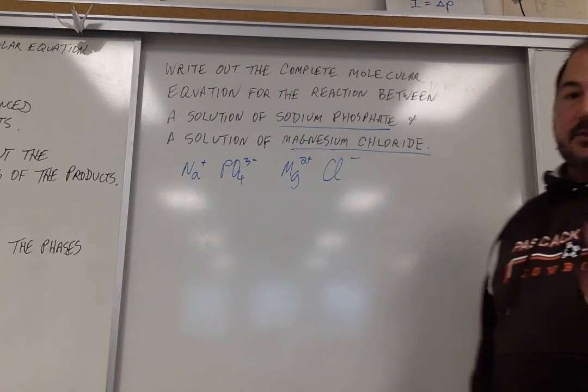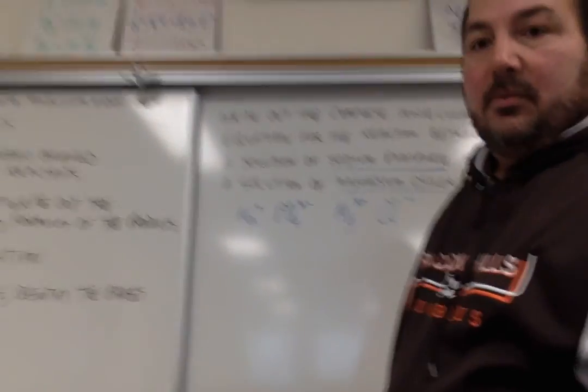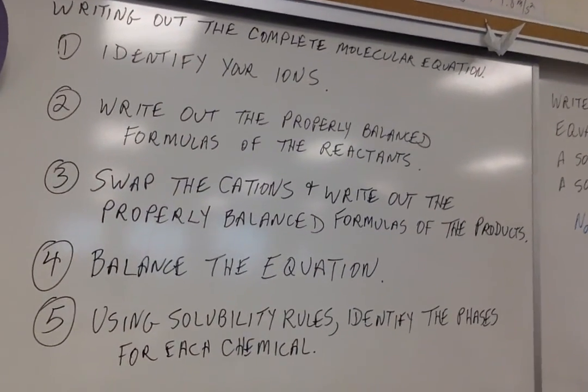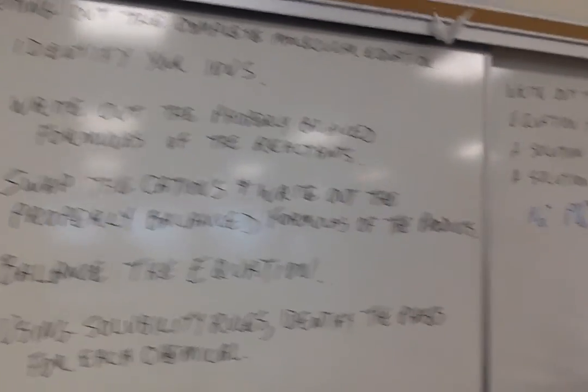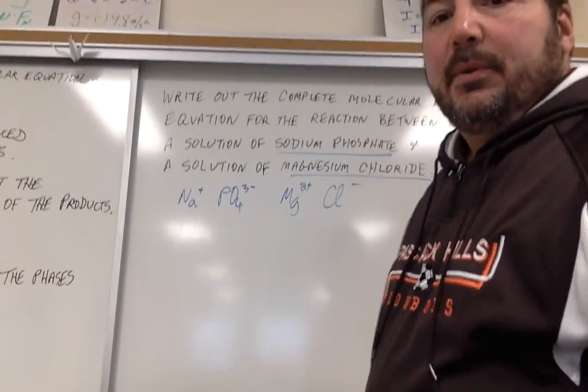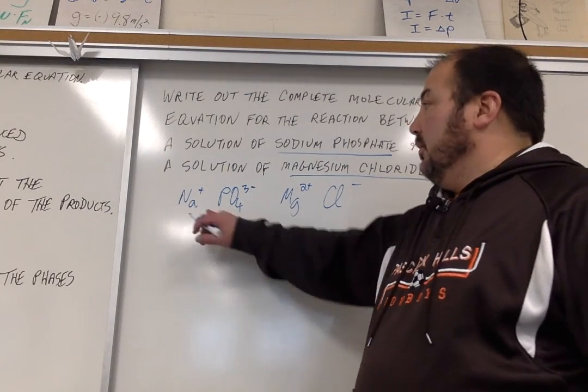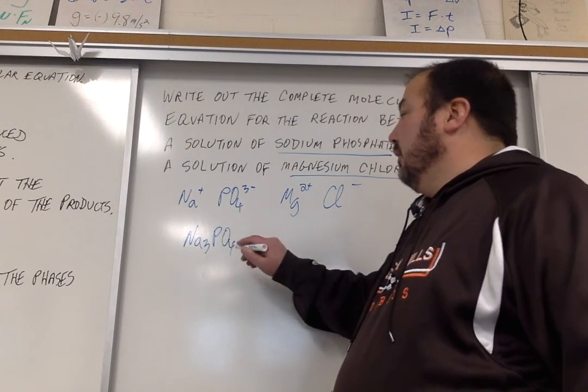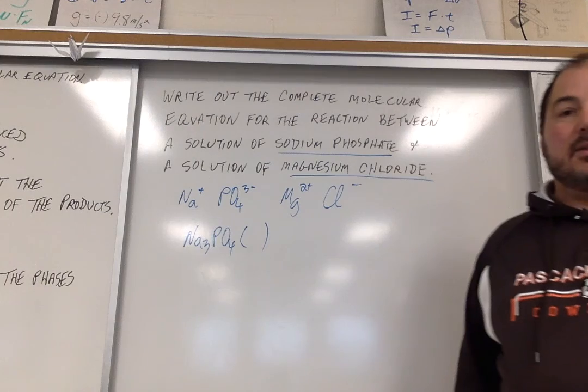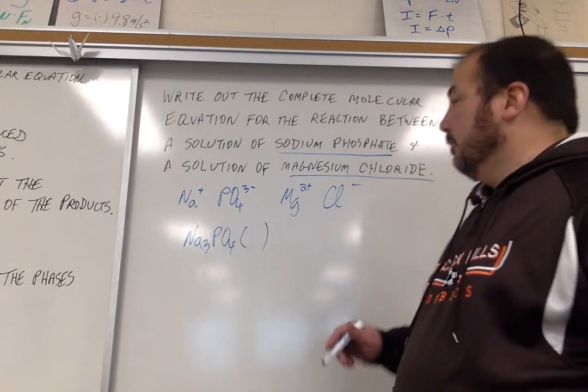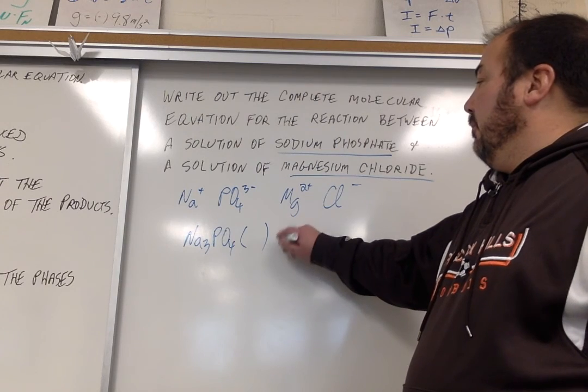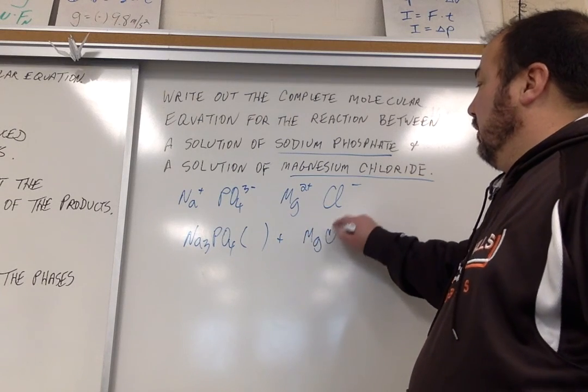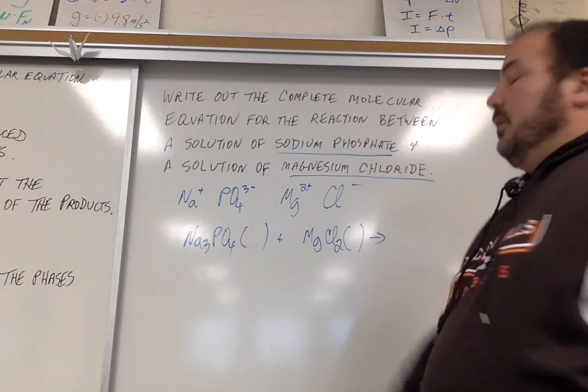Now that we have the ions, the next step we had mentioned briefly, we're going to write out the properly balanced formulas, the reactants. By properly balanced, I mean as an ionic compound, we have to make sure the total charge is zero. So we're going to take three sodiums and one phosphate to make Na3PO4. I'm going to leave room here to talk about the phases, which is basically the state of matter. Then we're going to go to magnesium chloride. Magnesium is plus two, chloride is minus one. So we have MgCl2. And there's the reactants.